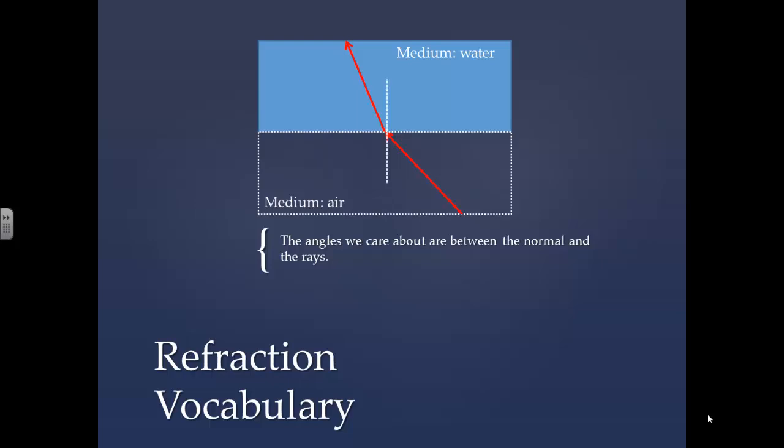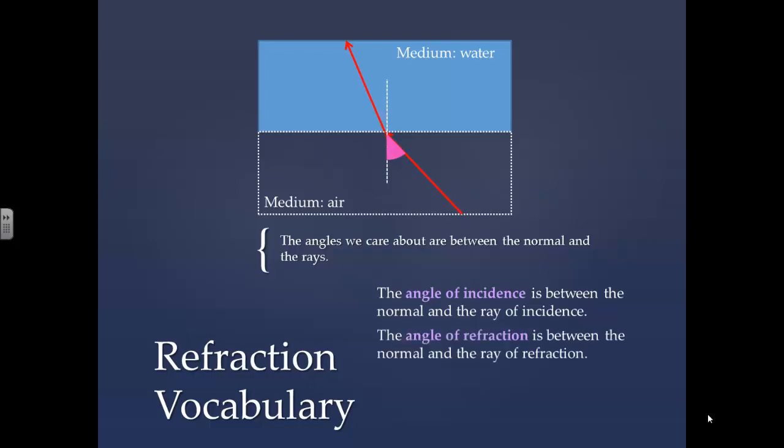The angles we care about are between the normal and the rays. The angle of incidence is between the normal and the ray of incidence. The angle of refraction is between the normal and the ray of refraction.